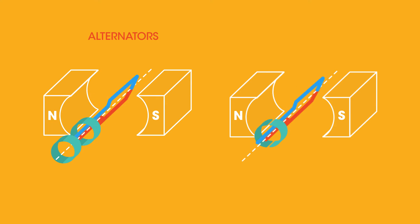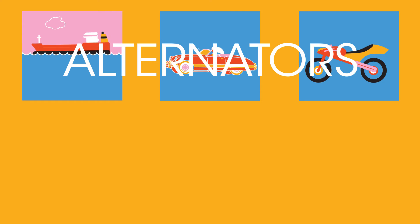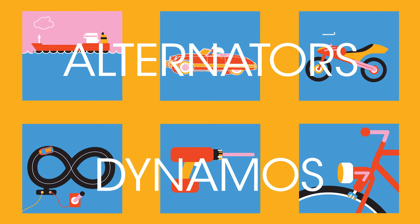This video is all about alternators and dynamos. They both use magnetic fields to produce electric power. Ships, cars, and motorbikes use alternators to charge their batteries. Toys, power tools, and bicycle lights use dynamos.